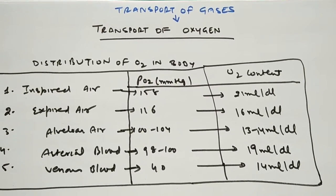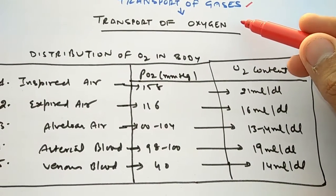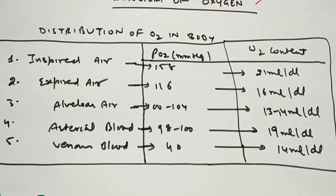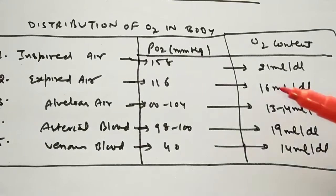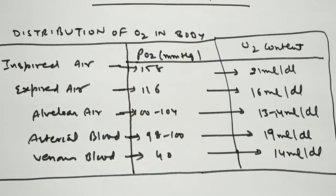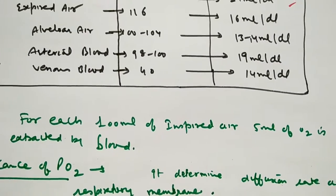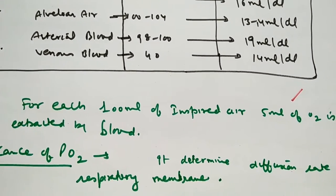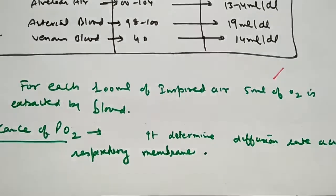Welcome back. Let's talk about the transport of gases during respiration. Today I will discuss transport of oxygen. First, there is a distribution of oxygen in the body — in inspired air, expired air, alveolar air, arterial blood, and venous blood, according to partial pressure. Partial pressure is the pressure difference of various gases, and it determines the diffusion of gases across the respiratory membrane, across the capillary wall and the alveolar wall.